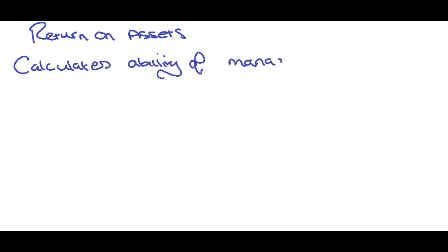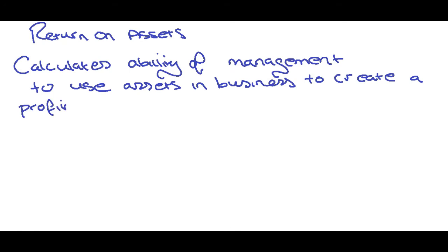So let's have a look at return on assets. So all this does is it calculates the ability of management to use assets in the business to create a profit. So how effective is management at creating a profit from the assets that we have? So if we were to have a look again here. Balance sheet. So we've got fixed assets here, current assets here, stock, cash here.